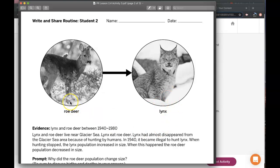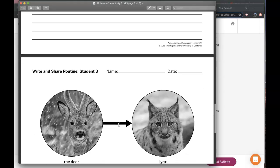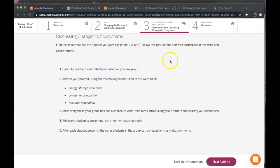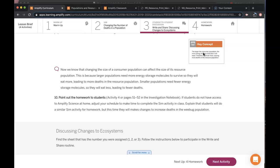When you have more predators, you're going to have a smaller resource population. Then illegal hunting happened again, so the lynx population went down. Therefore, they're eating less roe deer, and so the roe deer population increased in size.